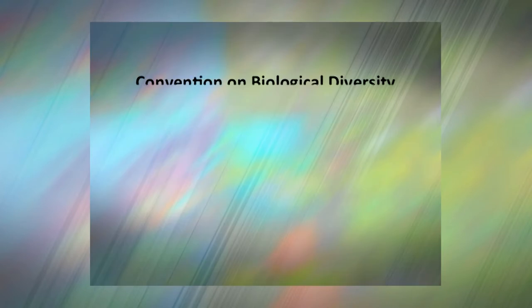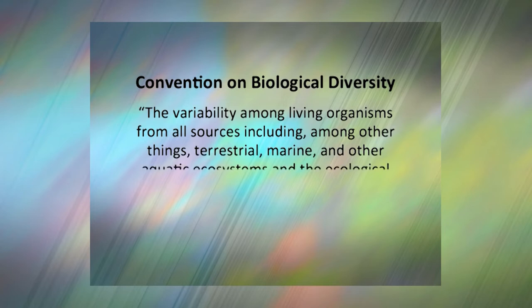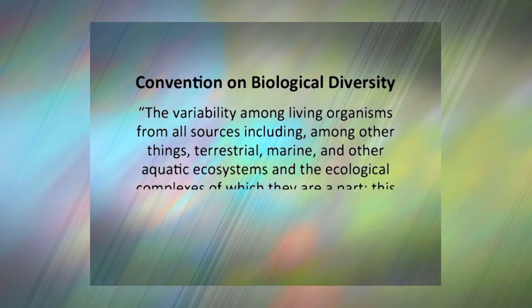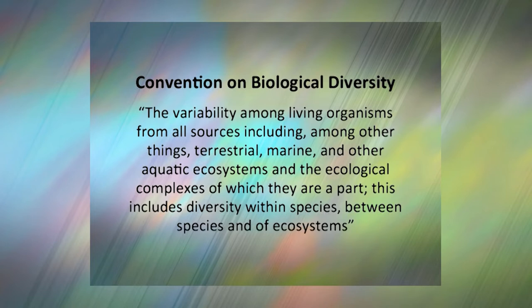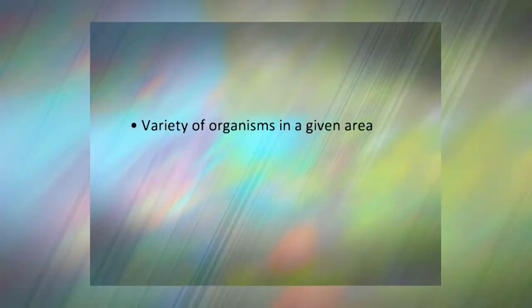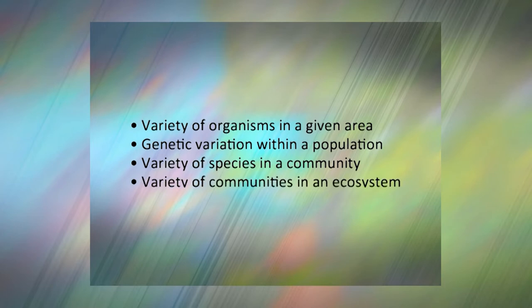The Convention on Biological Diversity defines biodiversity as the variability among living organisms from all sources including, among other things, terrestrial, marine and other aquatic ecosystems and the ecological complexes of which they are a part. This includes diversity within species, between species and of ecosystems. Biodiversity, a contraction of biological diversity, is the variety of organisms in a given area, the genetic variation within a population, the variety of species in a community or the variety of communities in an ecosystem.